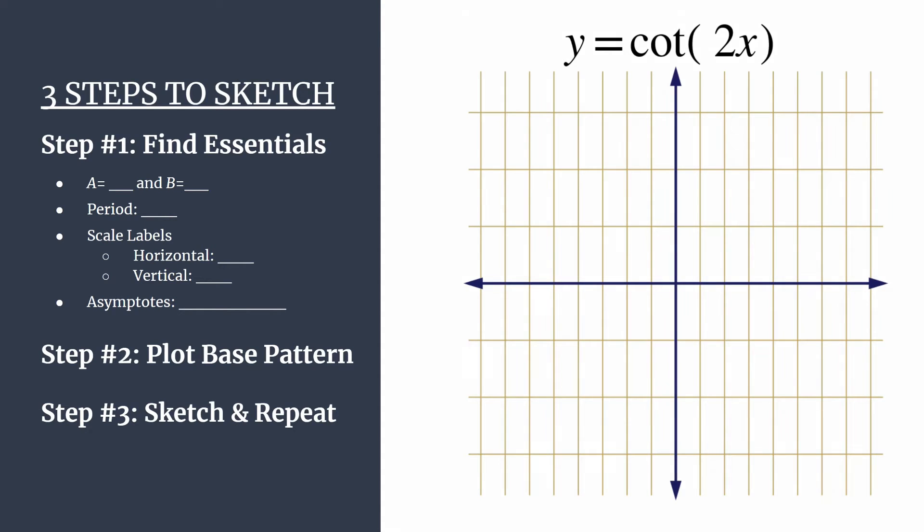All right, so we're graphing y equals cotangent of 2x. It's in that general form, y equals a cotangent bx. Okay, no shifting again going on here. And we'll start step one, our essential step, by identifying a and b.